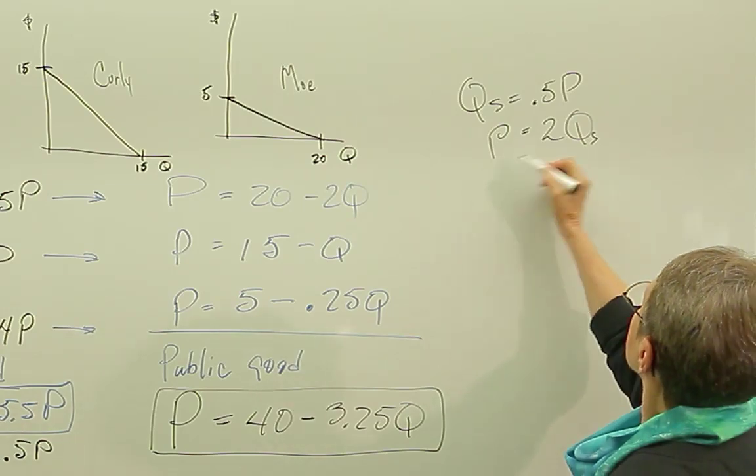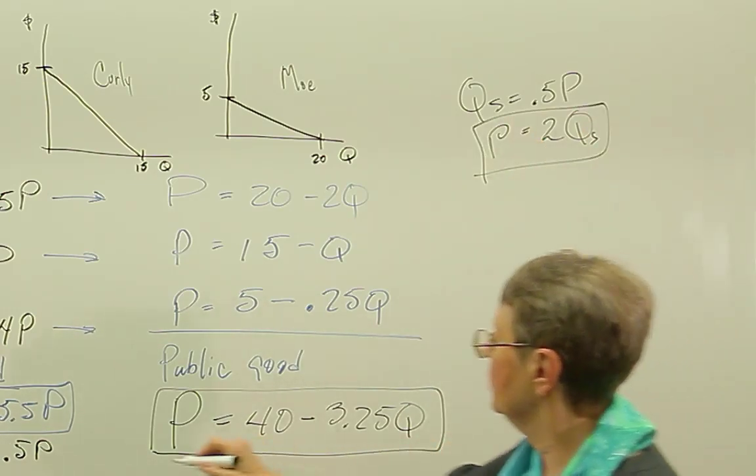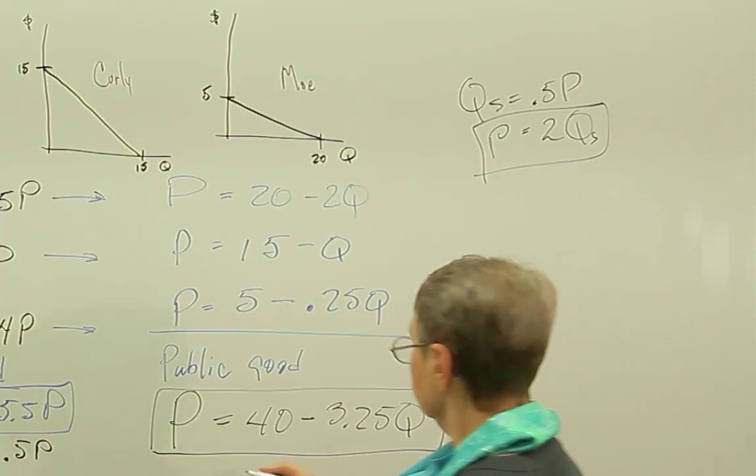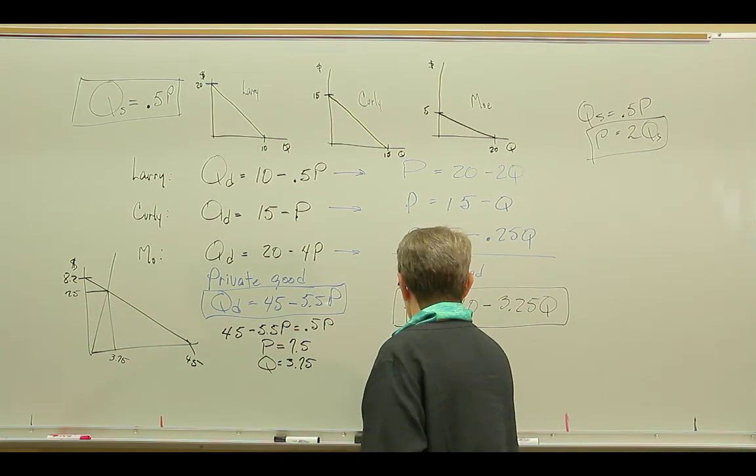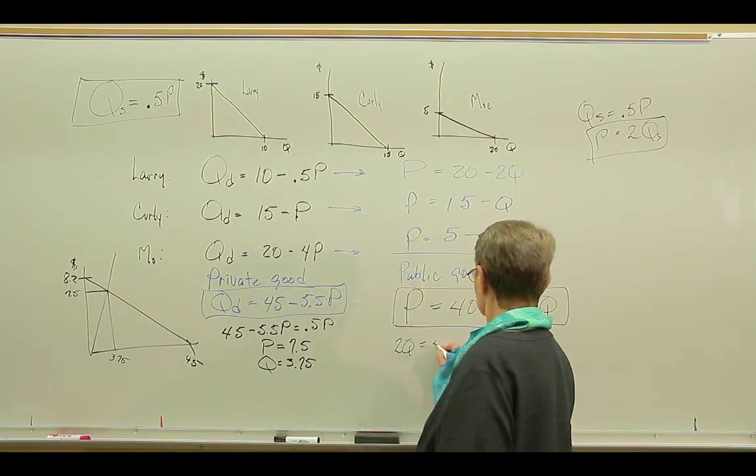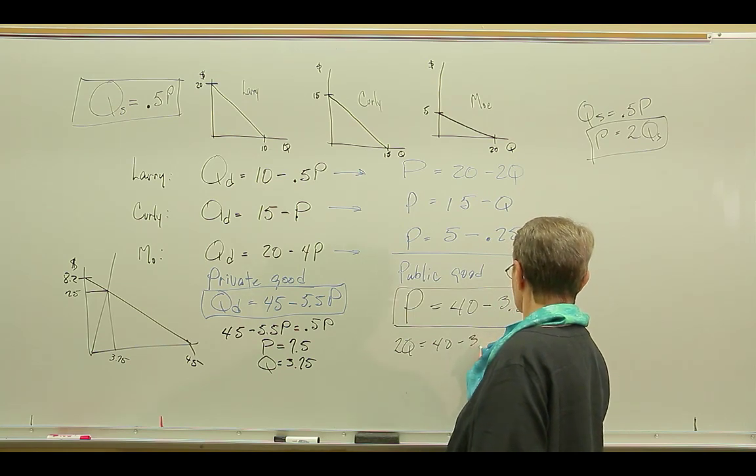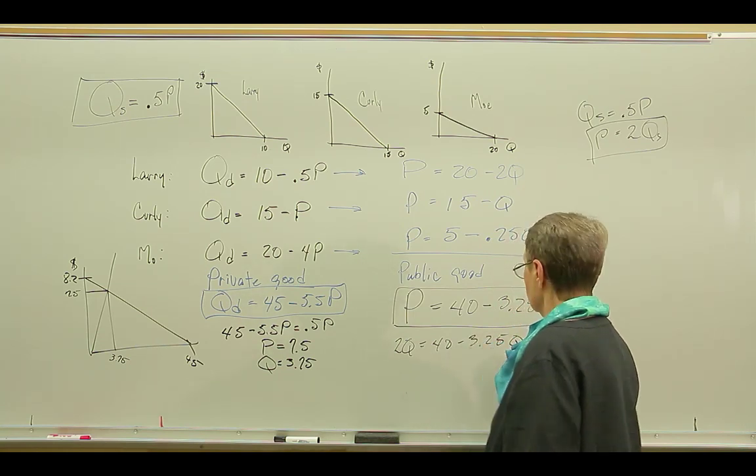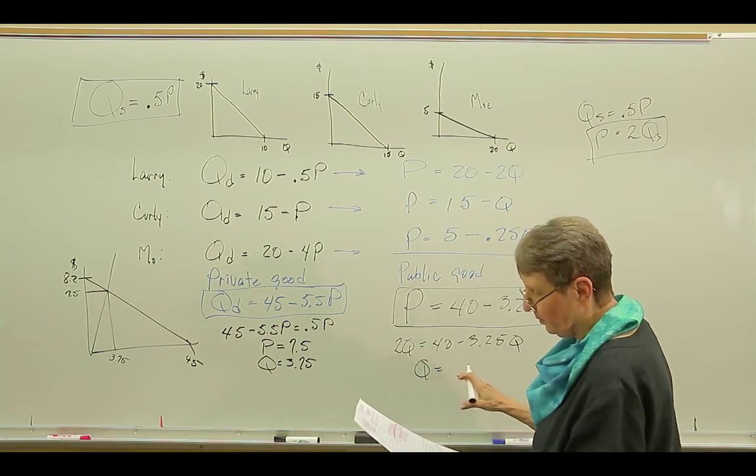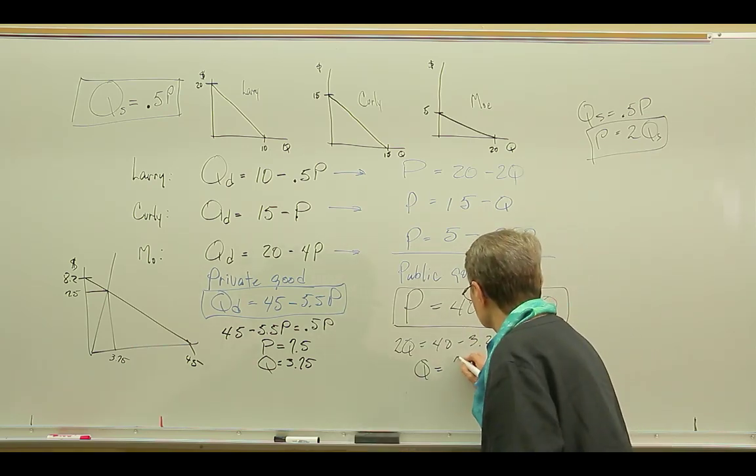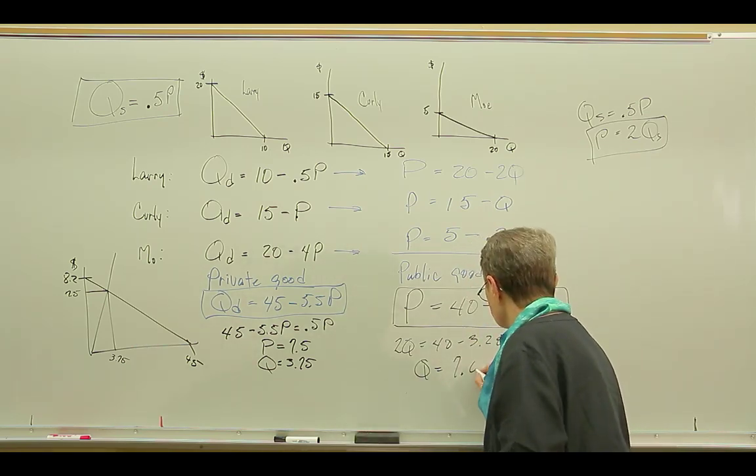So set this equal to this. And so we have 2Q equals 40 minus 3.25Q. And so the quantity, in this case for the public good, is equal to 7.62.